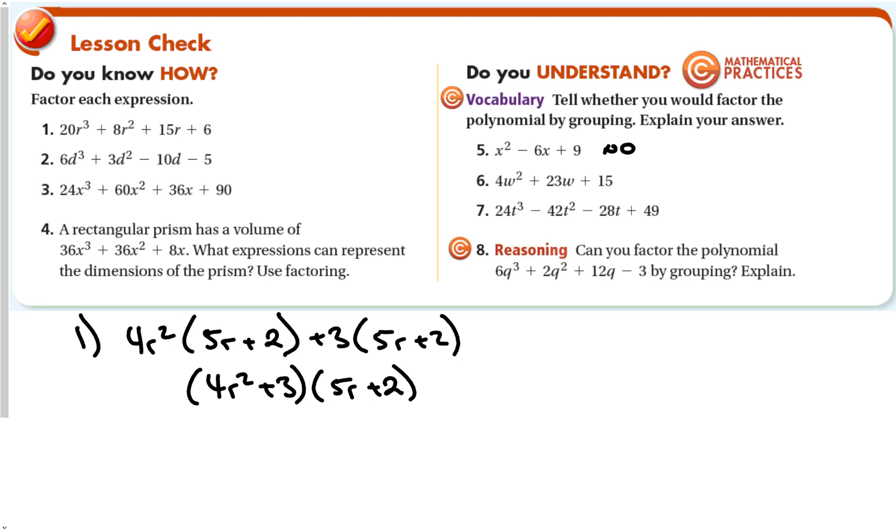And that just happens to be a perfect square trinomial, because three times three equals six, and negative three times negative three is positive nine. Negative three plus negative three is negative six.